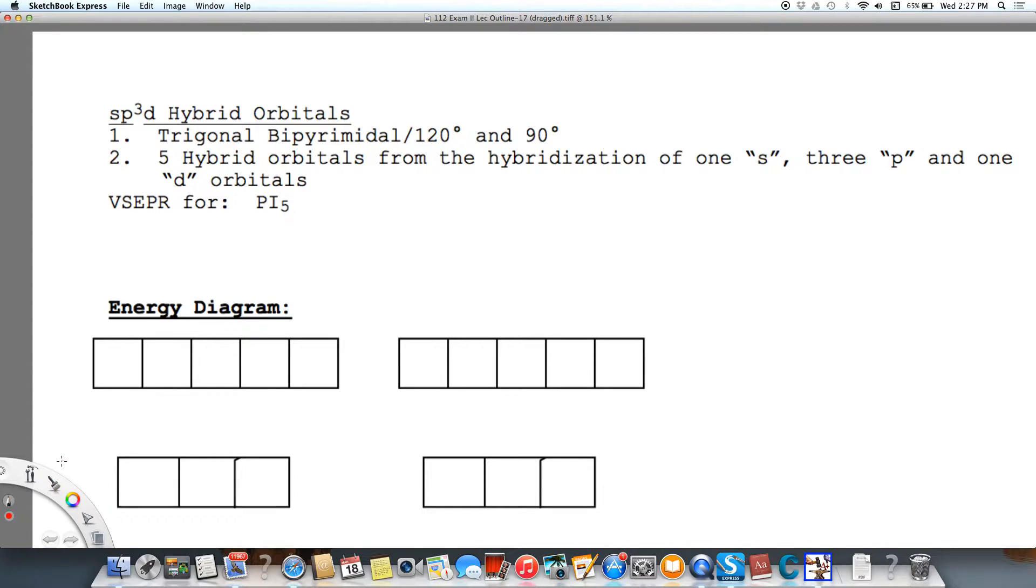All right, so we're going to write some more hybridized orbitals, and we're going to look at the molecule PI5, phosphorus pentaiodide, and the first thing we want to do is draw the VSEPR for PI5.